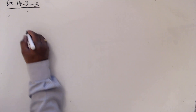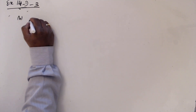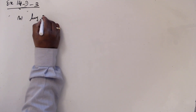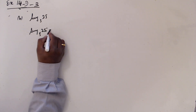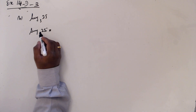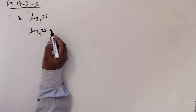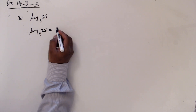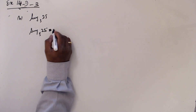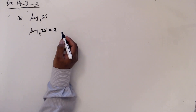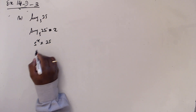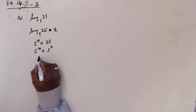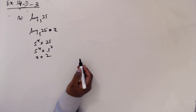This is b: log base 5 of 25. Log to base 5 of 25 — this will take x. Then 5 to the power x equals 25. 5 to the x equals 5 squared. So x equals 2.